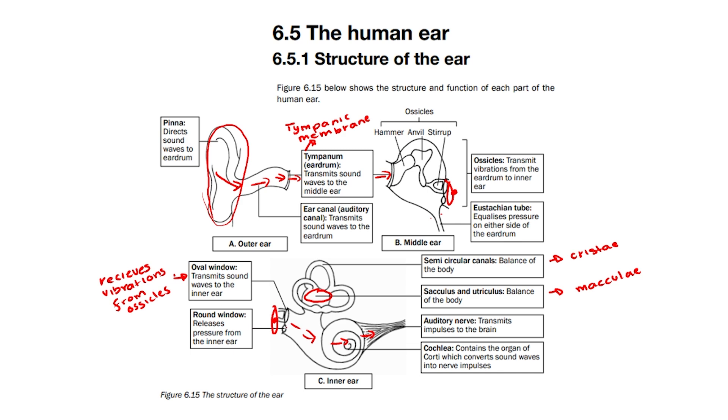Lastly, we have the round window, which is the small structure below the oval window. The round window releases pressure from the inner ear and prevents echoes. That's the structure of the ear. Thank you for watching.